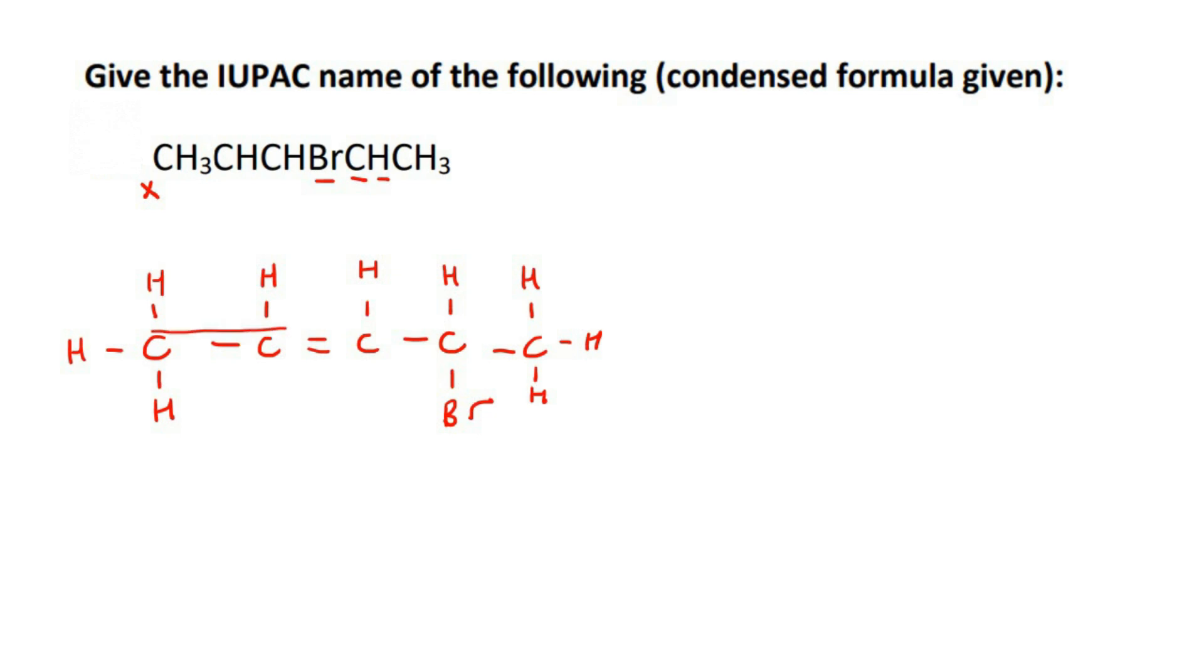So the longest continuous chain would be 1, 2, 3, 4, 5. So that's five carbons. So that's going to be pent.